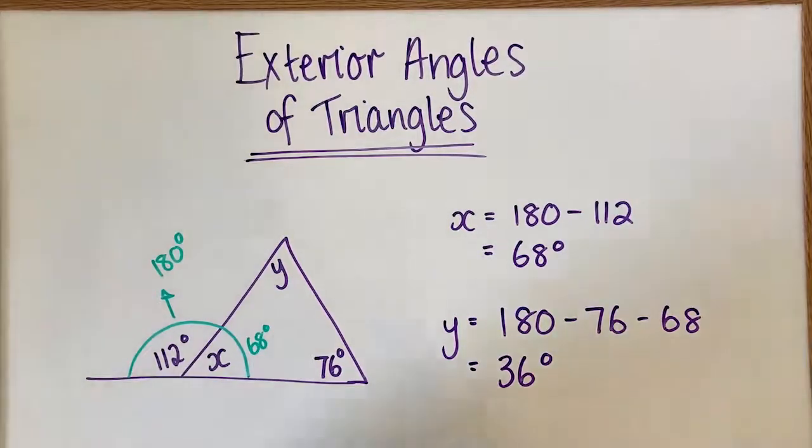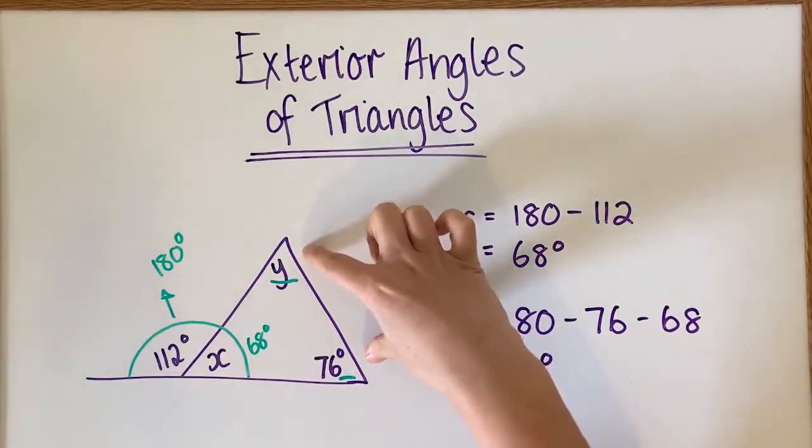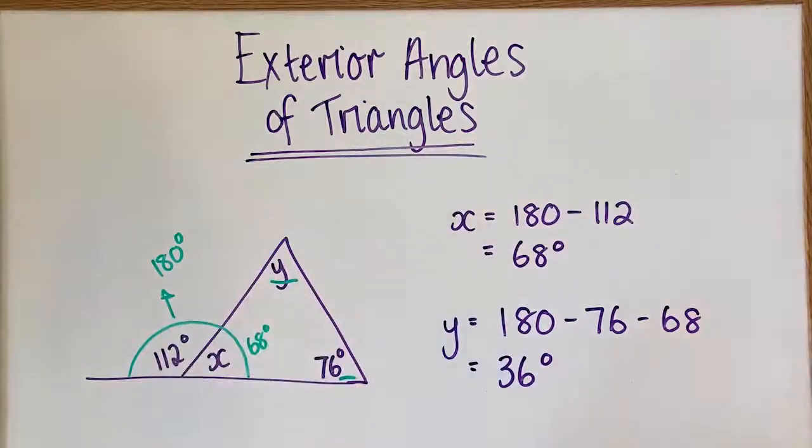Now, there's another way that we can check to see if we've done this right. These two interior angles should add to that exterior angle—not including the one that touches it. The ones that aren't touching the exterior angle should add to give me that. So 76 plus 36 should give me 112, and I know that 76 and 36 do add up to 112.